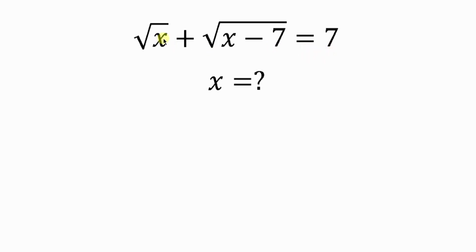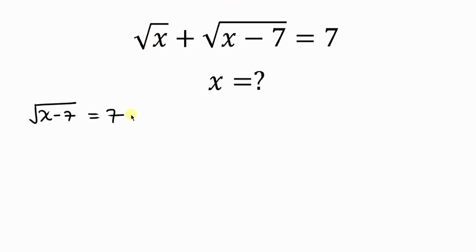Our first step will be to move the square root of x to the right-hand side, so that we are left with the square root of x minus 7 on the left. This is equal to 7 on the right, and as the square root of x crosses to the right, it becomes minus the square root of x.